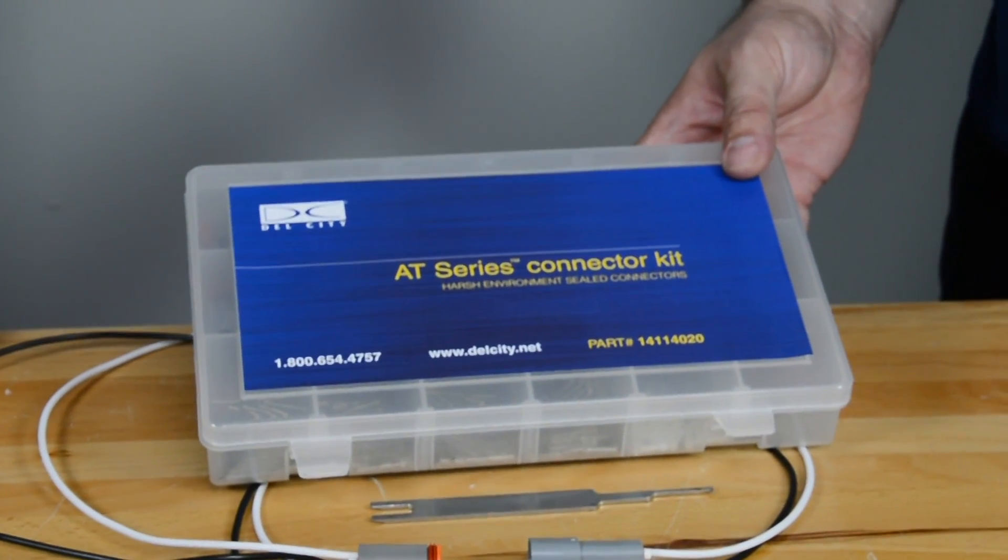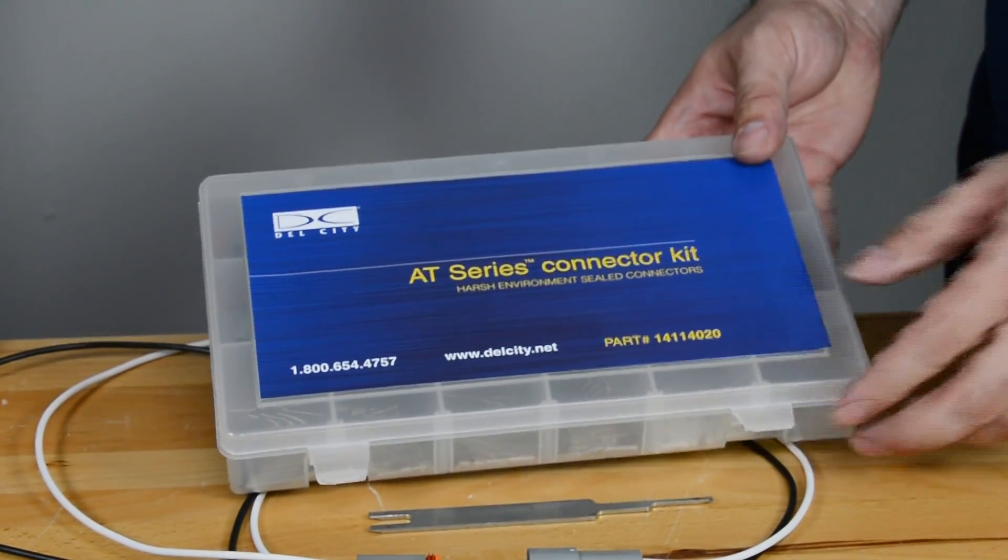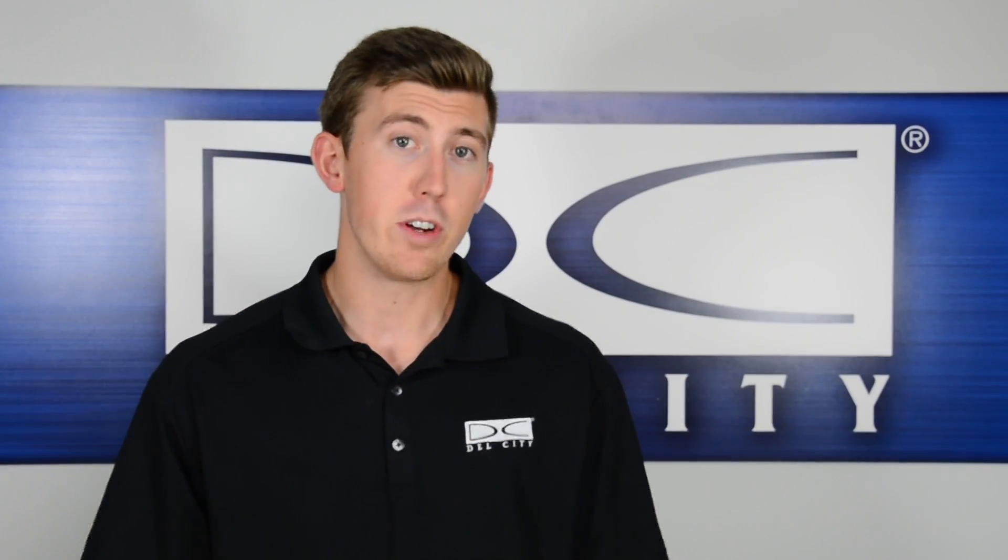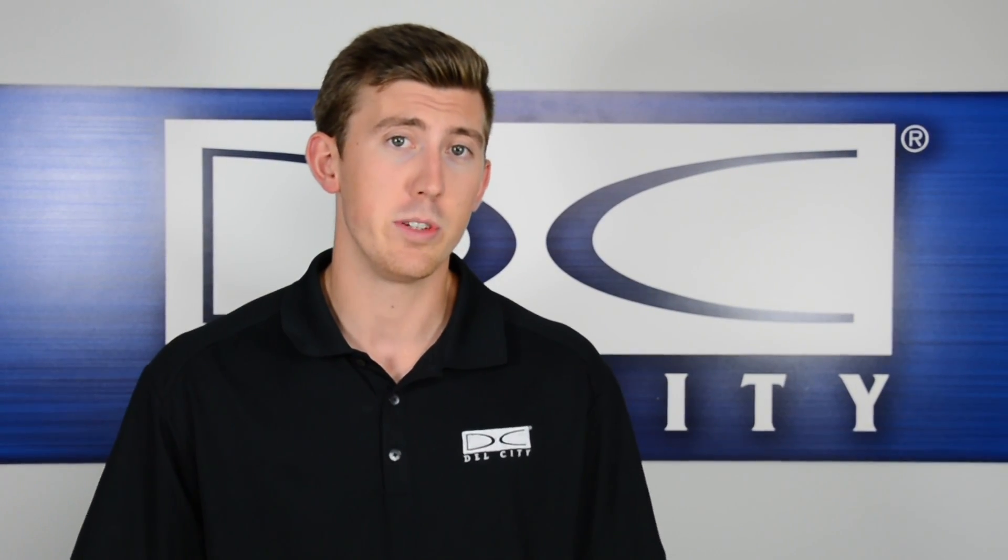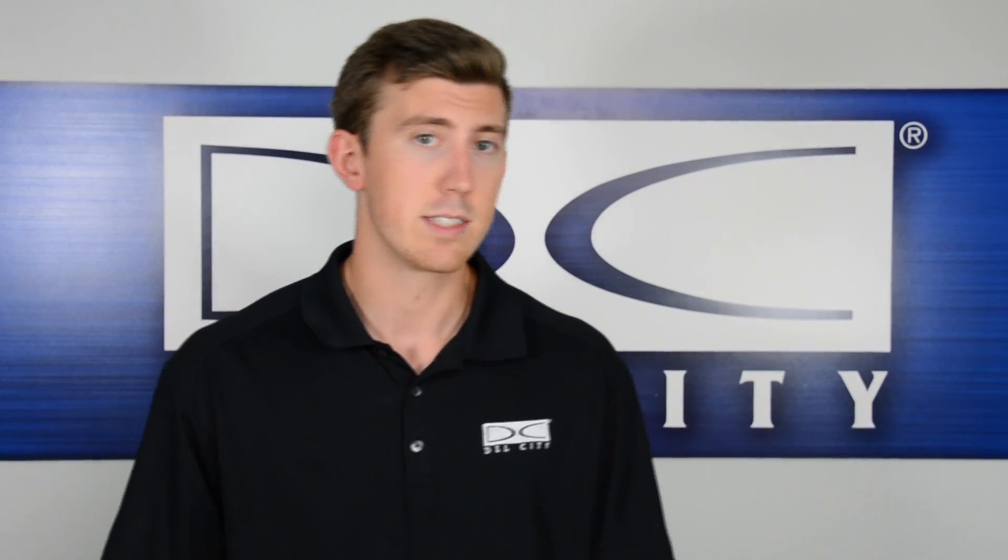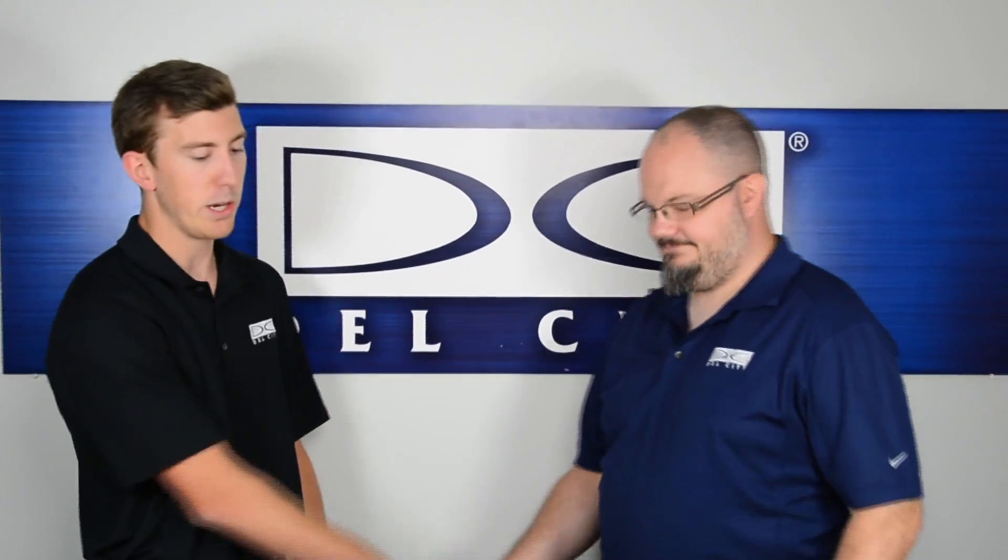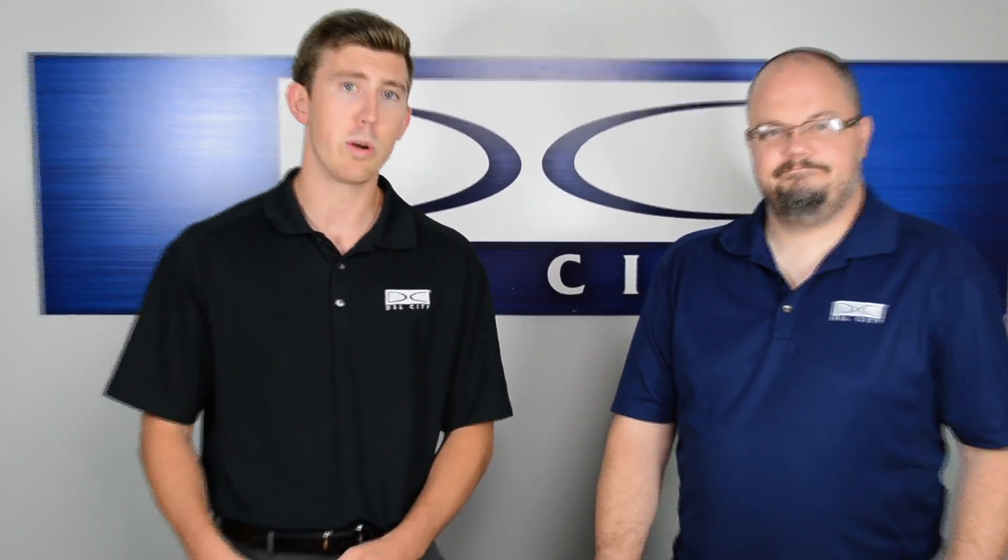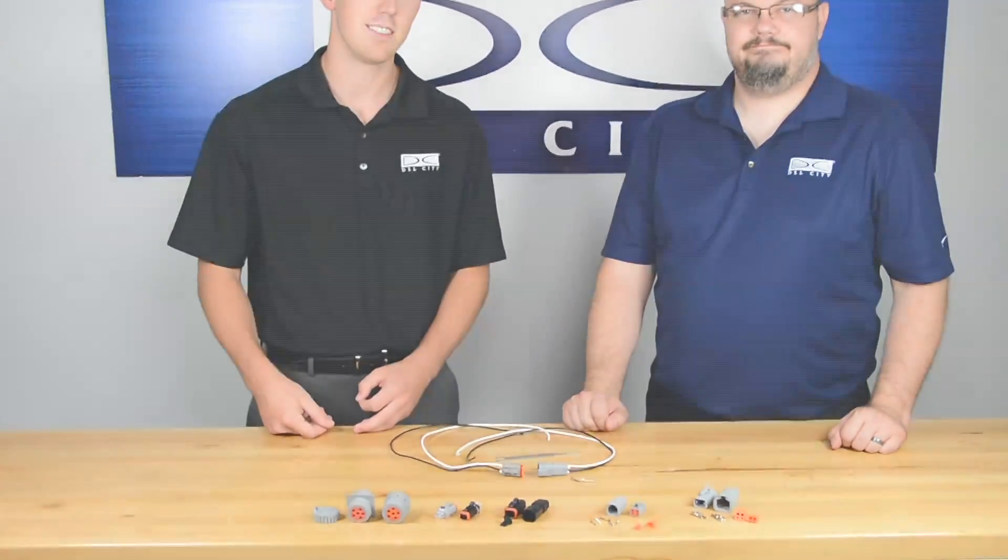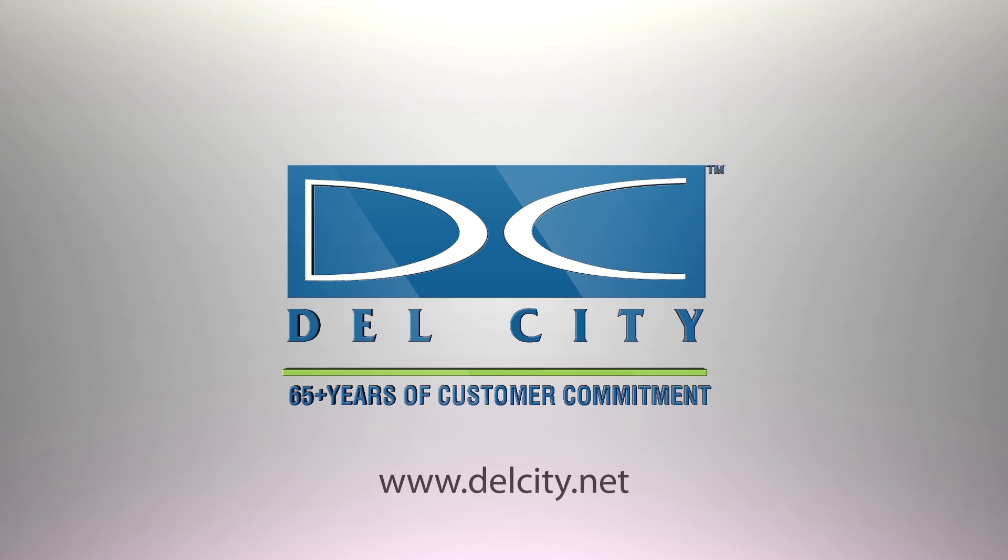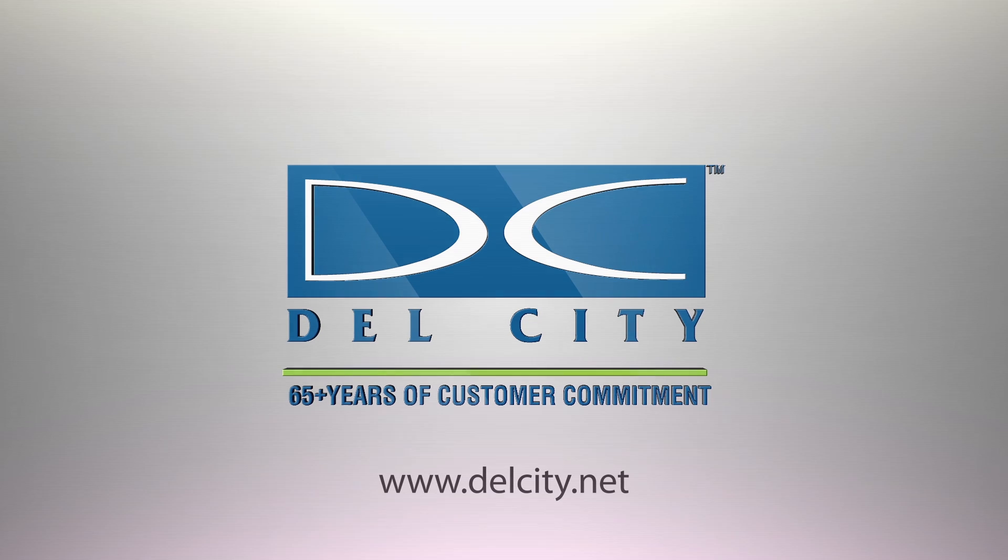For those who don't know specifically which items you need, I recommend checking out our AT Series connector kit containing 224 components to get you started. Amphenol's A line is a strong alternative to Deutsch's D line. You can view all of our A line series by clicking the link below. Scott, I wanted to thank you for stopping by and showing us the many similarities between Amphenol A and Deutsch. For more information on this or to place an order with us, visit us at dellcity.net. Thank you for watching this tutorial.